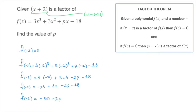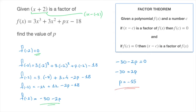Just as before, we know from the factor theorem that f of negative 2 must equal zero. Since f of negative 2 is also equal to negative 30 minus 2p, we can state that negative 30 minus 2p must equal zero. That leads us to negative 30 equals 2p, and we quickly see that p must equal negative 15. We've just found the value of p, and we can rewrite our polynomial as f of x equals 3x cubed plus 3x squared minus 15x minus 18.